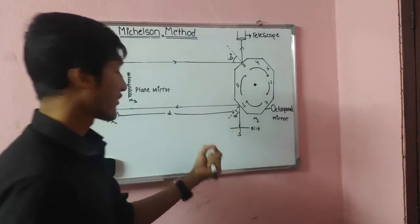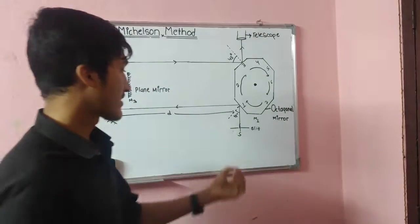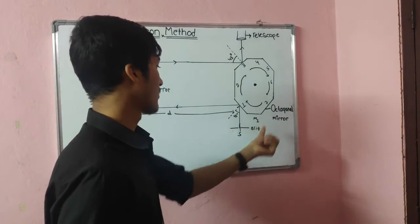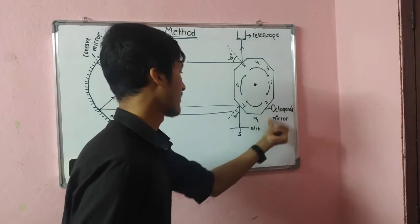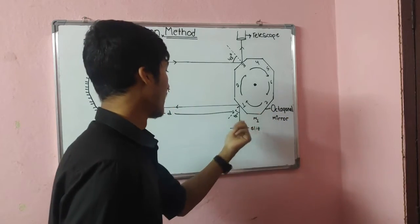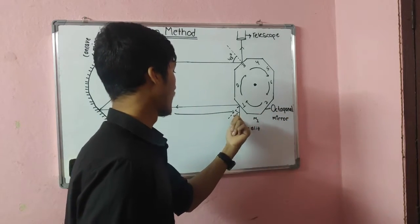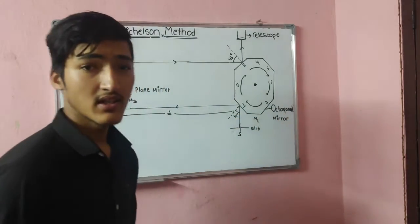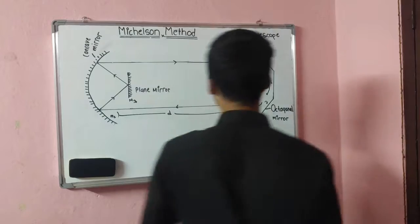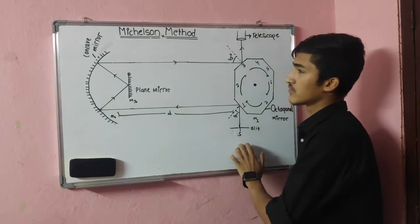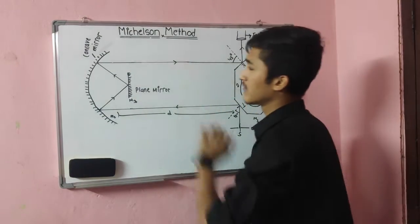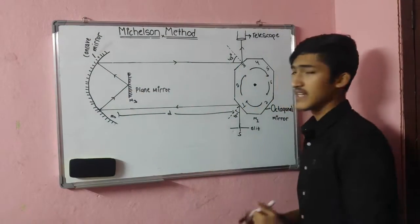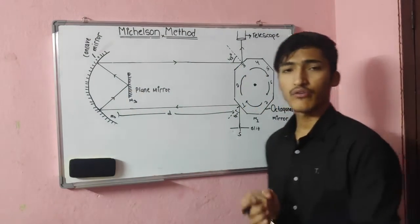After reflection, when light is incident on one face of the octagonal mirror at an angle of 45°, after passing through the slit, the reflected light is sent to the concave mirror M2, which is at a distance D.